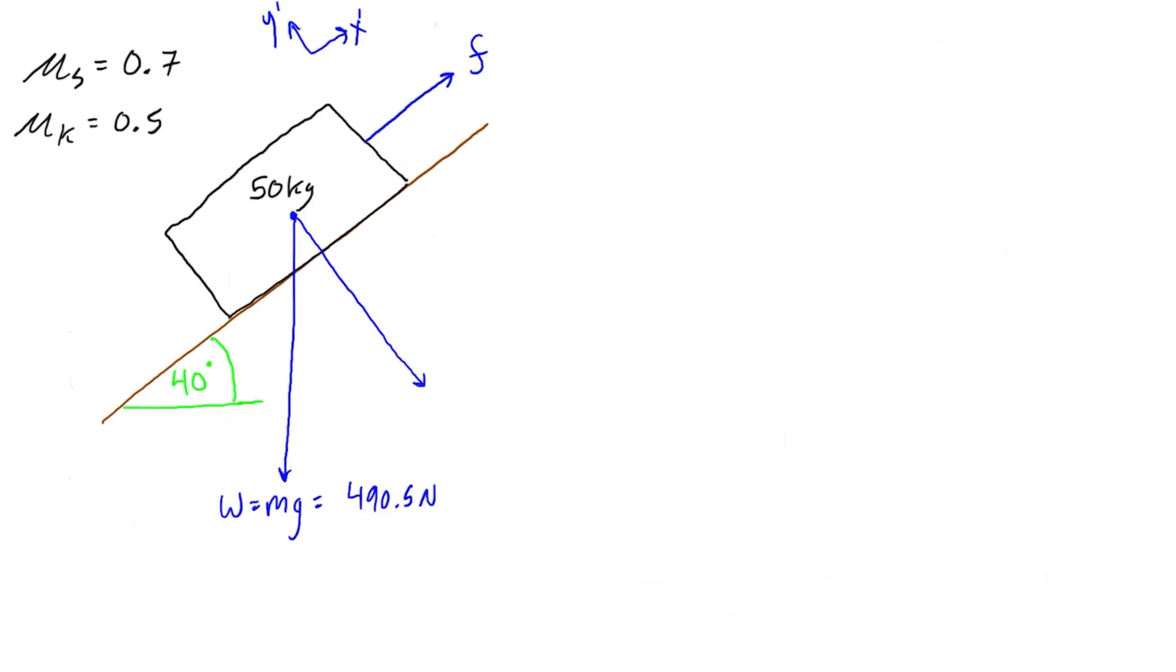We're going to have y prime like that, so this will be Wy prime and this will be Wx prime. So Wy prime is just W cos 40, because this angle in here is also 40 degrees. So that's just going to be equal to 490.5 times the cos of 40, which is 375.7 newtons. Wx prime is just W sine 40.